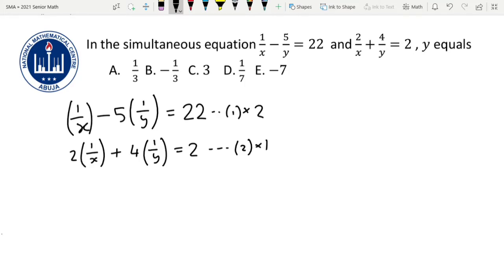Then this becomes, when you multiply by 2, you have 2(1/x) - 10(1/y) = 44. You have to make sure to multiply everything by 2, not just 1/x.